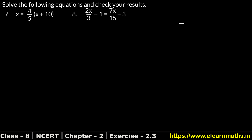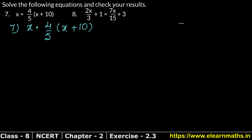Let's do question number 7 of exercise 2.3 on linear equations in one variable. Question 7: we have to solve x equals 4 upon 5 bracket x plus 10. You can take the 5 here and 4 below, with x plus 10 as it is.